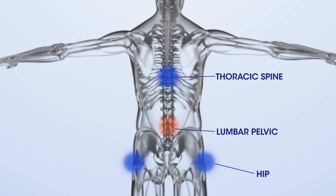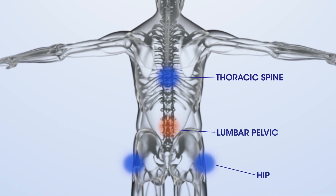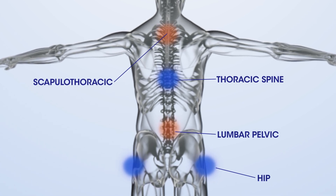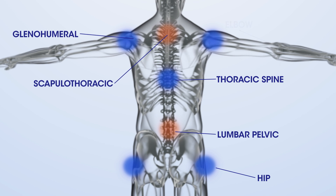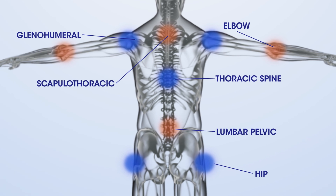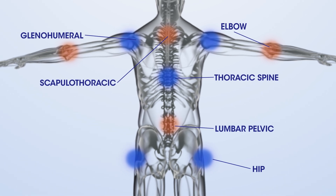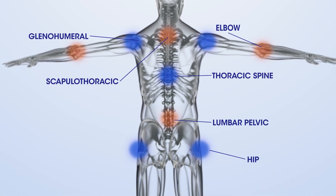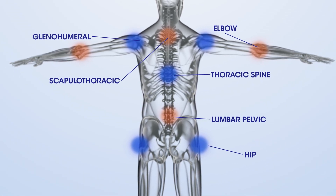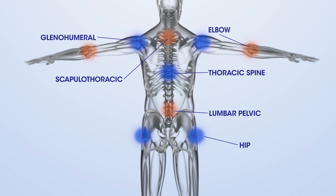The next couple of things: the scapulothoracic joint is designed to be stable. The next joint out — the shoulder, the glenohumeral joint — is highly mobile. The elbow is stable. And if we drop down from the hips: we had mobile hips, the knees as a hinge joint should be stable, and the ankle is mobile.